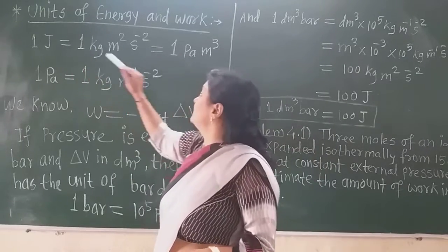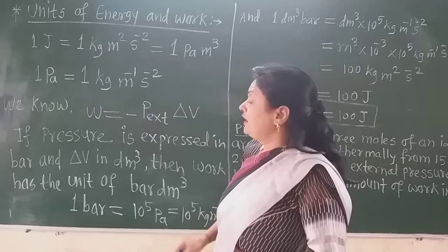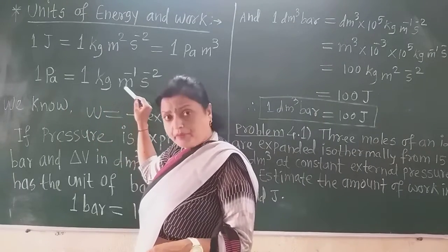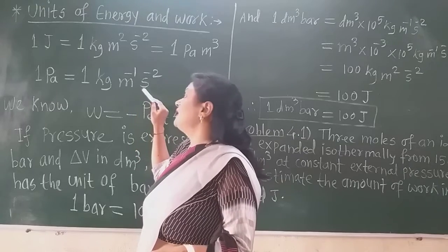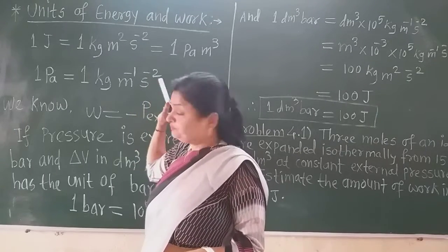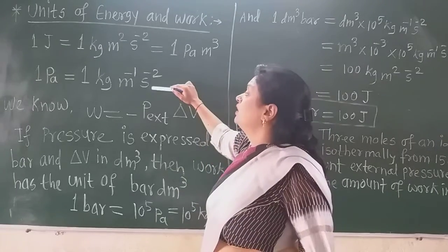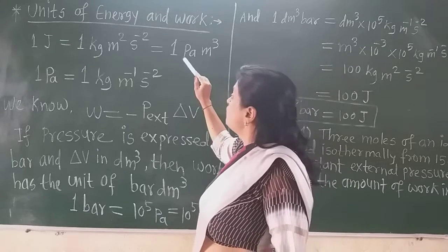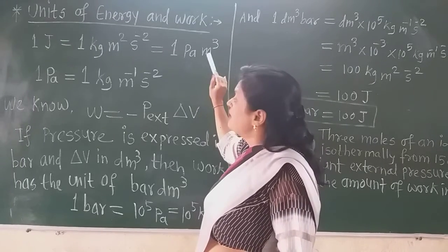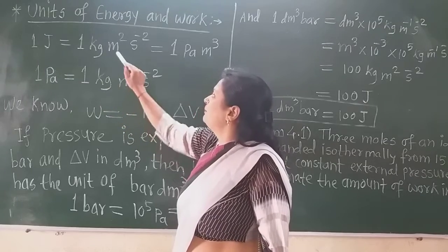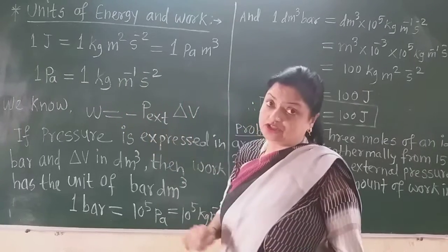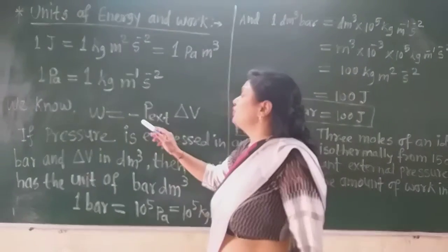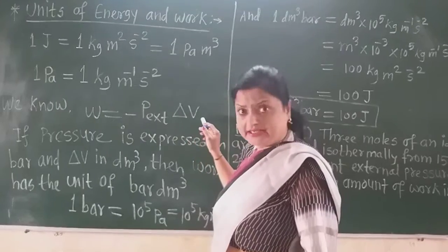So 1 joule means 1 Pascal times meter cube. Now, 1 Pascal equals 1 kilogram per meter per second squared. Here we have meter squared in one place and meter cube in the other. So 1 Pascal equals 1 kilogram per meter per second squared. This is the definition of Pascal. We know the formula W equals minus P_external into delta V.